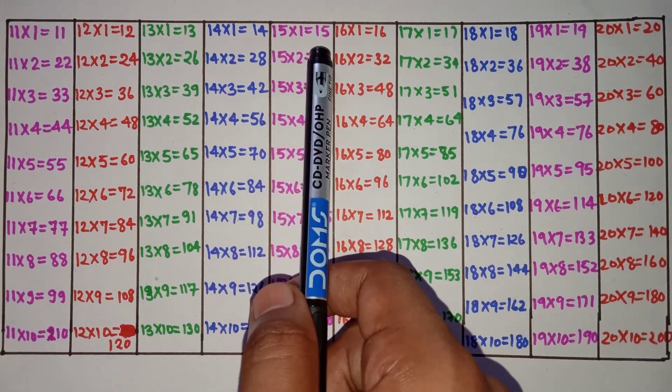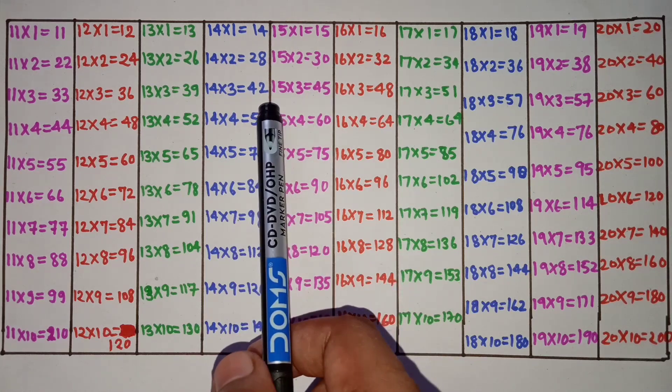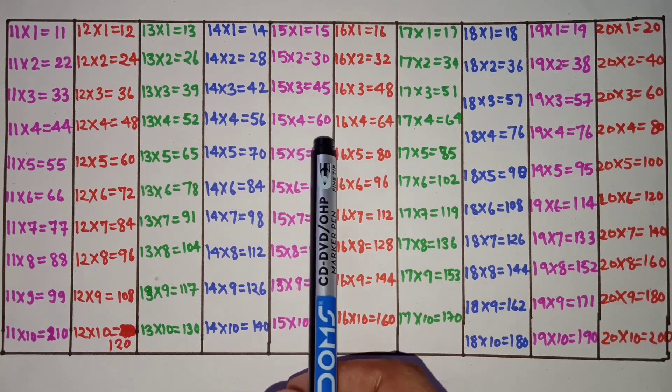15 ones are 15, 15 twos are 30, 15 threes are 45, 15 fours are 60.